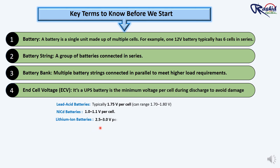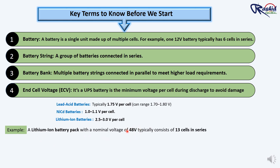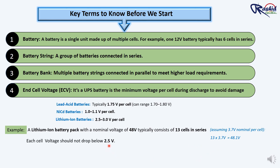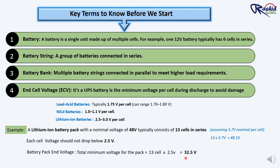Lithium-ion batteries have an end cell voltage of 2.5V to 3V per cell. For example, a lithium-ion battery pack with a nominal voltage of 48V typically consists of 13 cells in series, each with a nominal voltage of 3.7V. Total nominal voltage: 13 × 3.7V = 48.1V. Each cell voltage should not drop below 2.5V — this is the end cell voltage. So the total minimum pack voltage equals 13 × 2.5V = 32.5V.